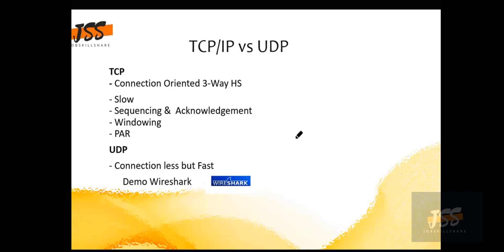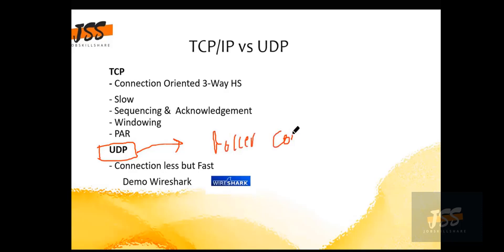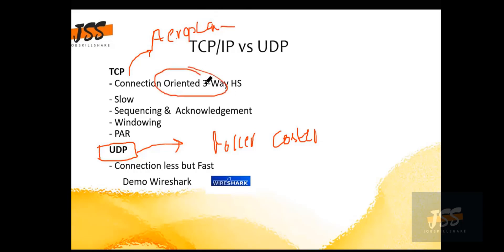Then we have UDP. You can think of this like a roller coaster — or consider TCP like an aeroplane, where you need to provide your passport, ticket, and all information before you travel. But in the case of UDP, it is fast — we need to reach our destination as soon as possible.